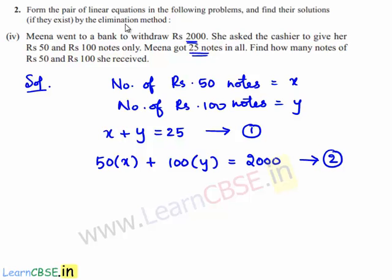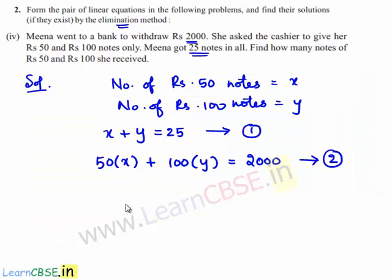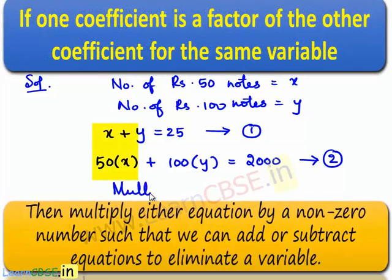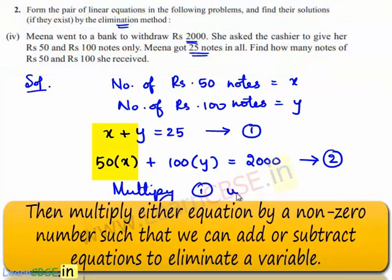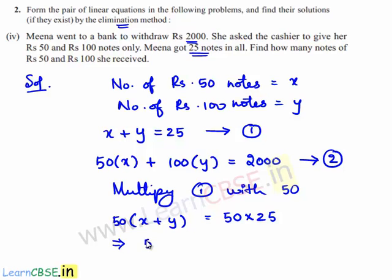We have to solve both equations by the elimination method. So let us multiply equation 1 by 50. We will be getting 50 times of x plus y is equal to 50 times 25, which gives 50x plus 50y is equal to 1250.